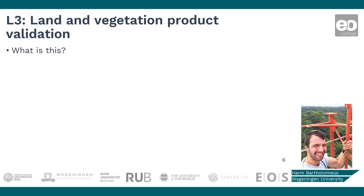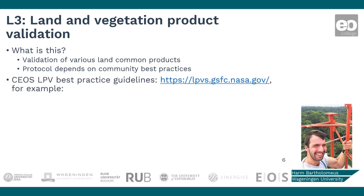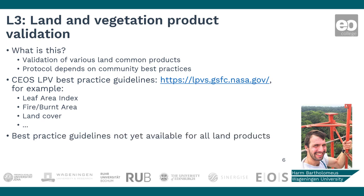How to validate a level 3 product depends on which kind of data are derived from the remote sensing data. Basically, a good amount of ground truth measurements is needed. They should have a good spatial distribution and ideally cover the whole range of values that is present in the product. For some products, there are best practice guidelines for the validation, which can be found in the SEOS protocol. However, such a protocol is not available for all the products yet.